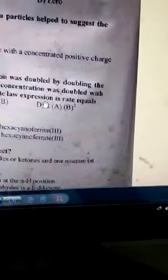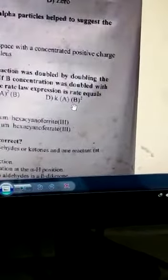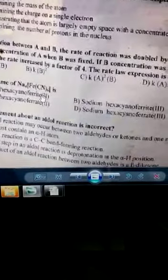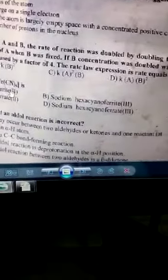IUPAC name: Na4[Fe(CN)6]. This will be option D: Sodium hexacyanoferrate(II).